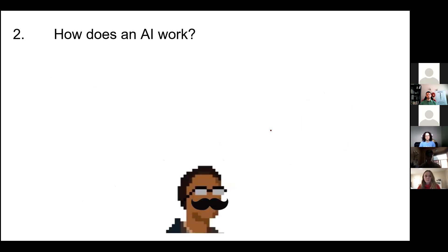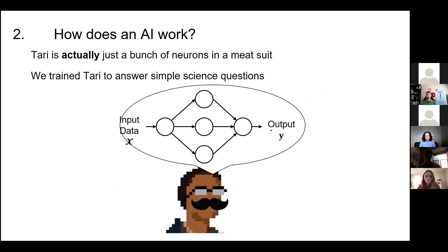Now I have to come clean about Terry. Terry is really just a bunch of neurons wrapped in a meat suit — Terry is a neural network. We gave Terry some input data, then questioned them on take-home quizzes, asked Terry to perform well, and kept training again and again. Every time they got a question wrong, they tweaked their neural network slightly — changed their answer and tried again.